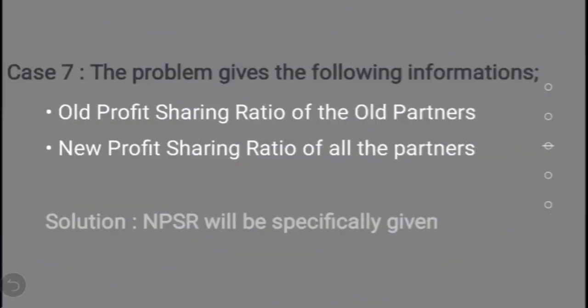In Case 7, the problem gives the old profit sharing ratio of the old partners and the new profit sharing ratio of all the partners directly. Since the new profit sharing ratio of all partners is specifically given in the question, no calculation is required — whatever is given in the question can itself be taken as the new profit sharing ratio. These are the seven cases for calculating new profit sharing ratio. Let us take up the next concept in the next video. Thank you for watching.